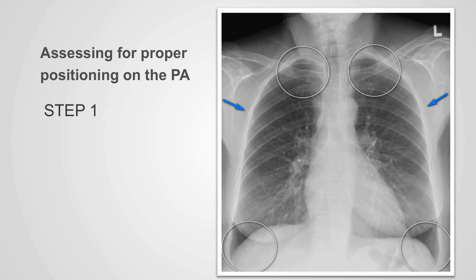We take the following steps to assess for proper positioning on the PA x-ray. First, identify the lung apices, the costophrenic angles or the lower aspect of the lateral parts of the lungs, and the lateral margin of the lungs all the way from the bottom to the top. Here we can see the lungs extending all the way to the ribs. The lungs form an edge with the chest wall laterally.